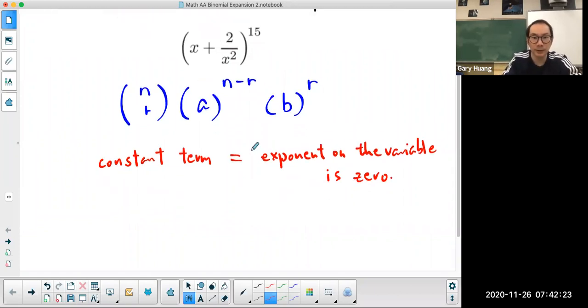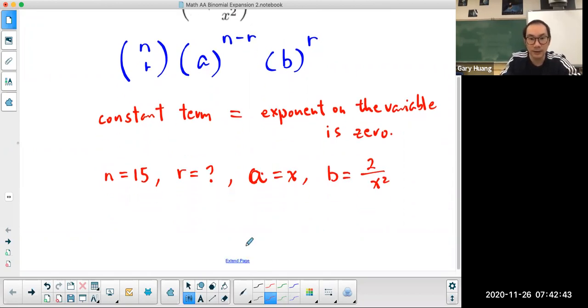So in this particular question, we know n is equal to 15. We don't know which term we are looking for. We know a is x, and we know b is 2 over x squared. So we can sub all those into the binomial theorem. 15 choose r, a which is x, 15 minus r, b which is 2 over x squared, to the power of r.